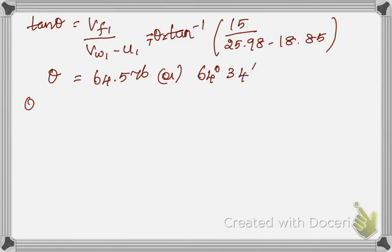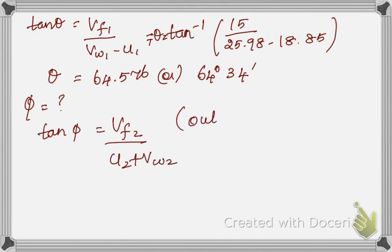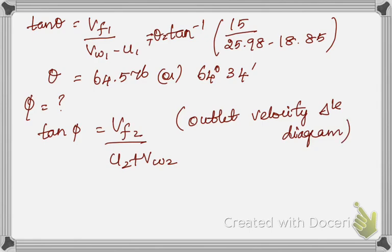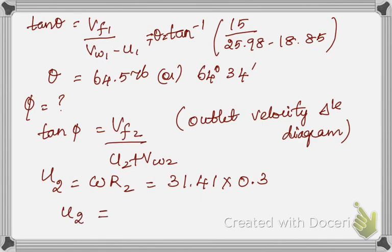Next we determine phi using the outlet velocity triangle formula: tan(phi) = vf2 / (u2 + vw2). We need u2, vf2, and vw2. u2 = omega × r2 = 31.41 × 0.3 = 9.423 m/s.